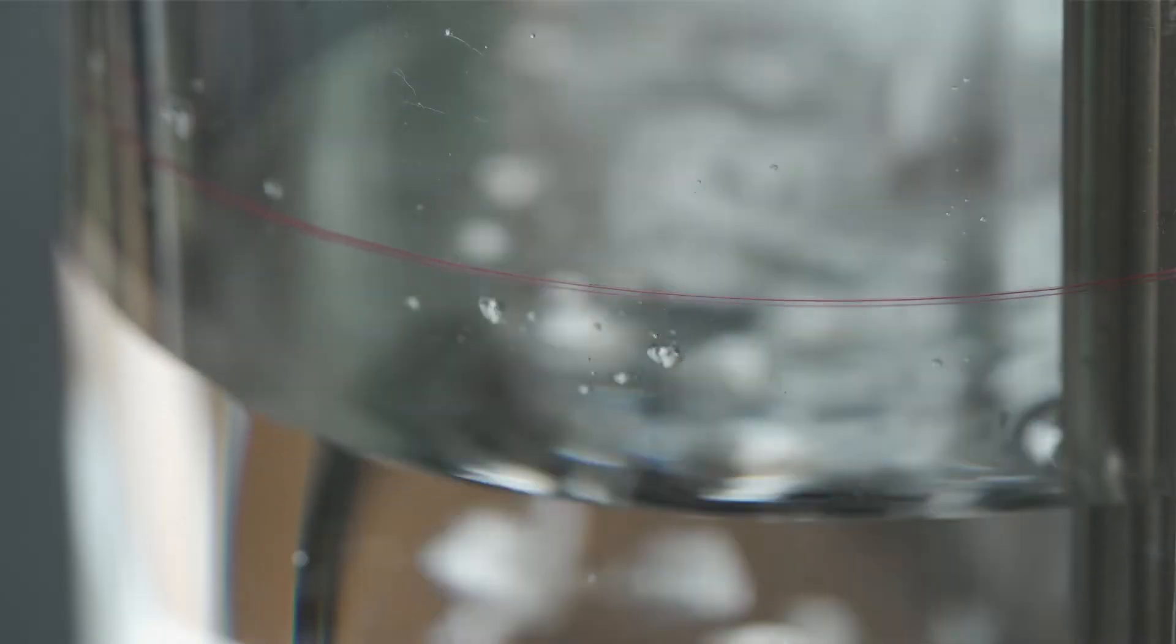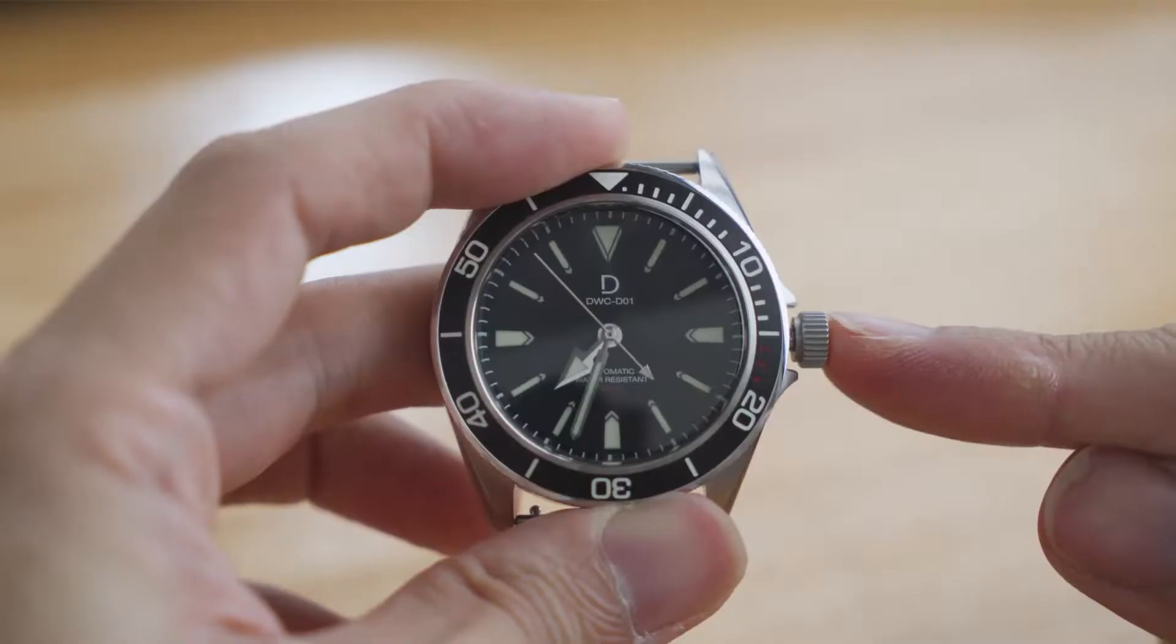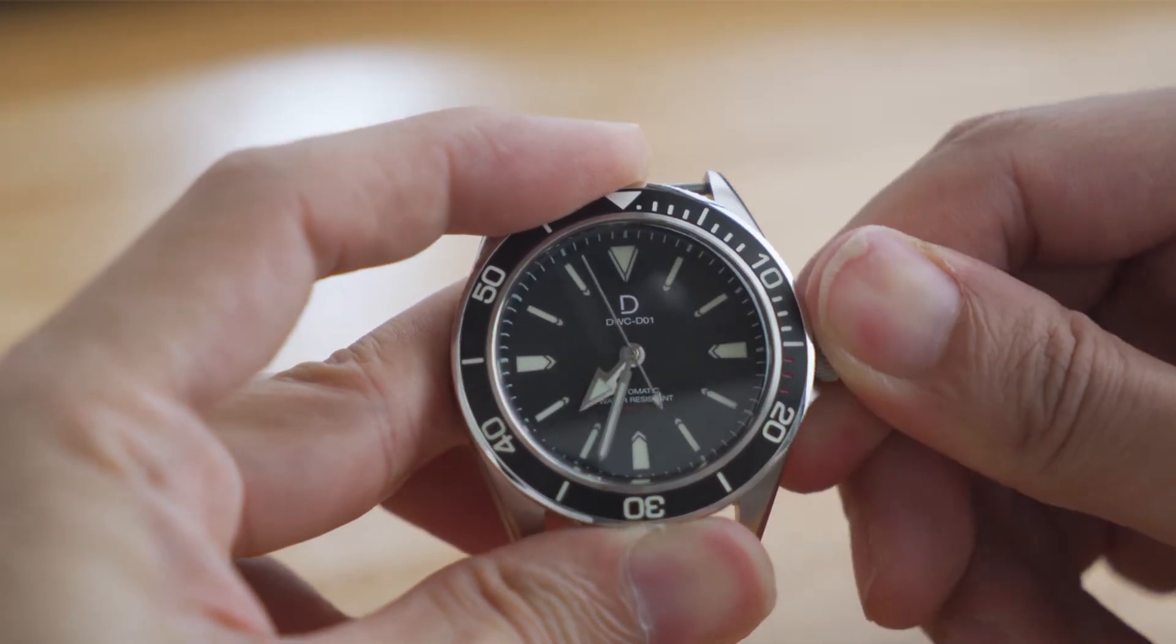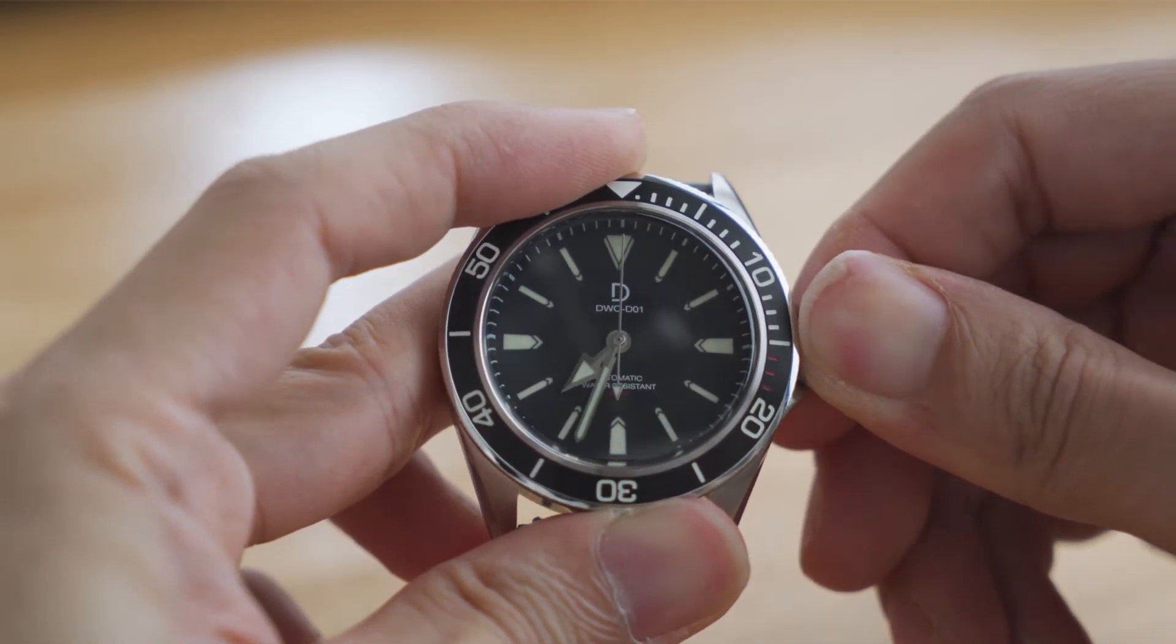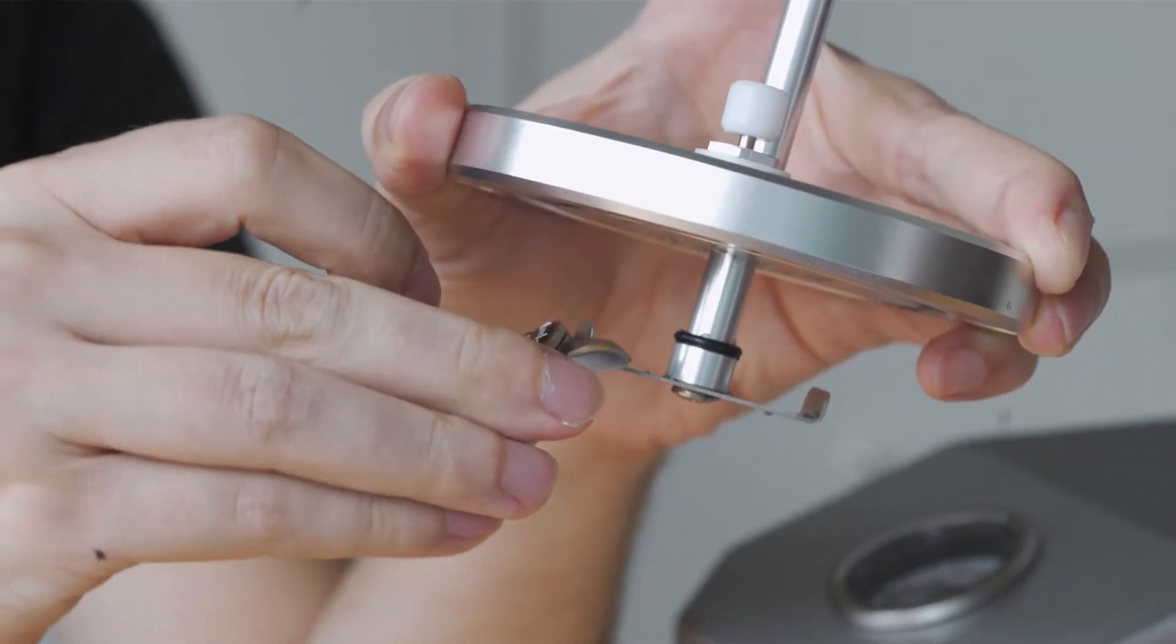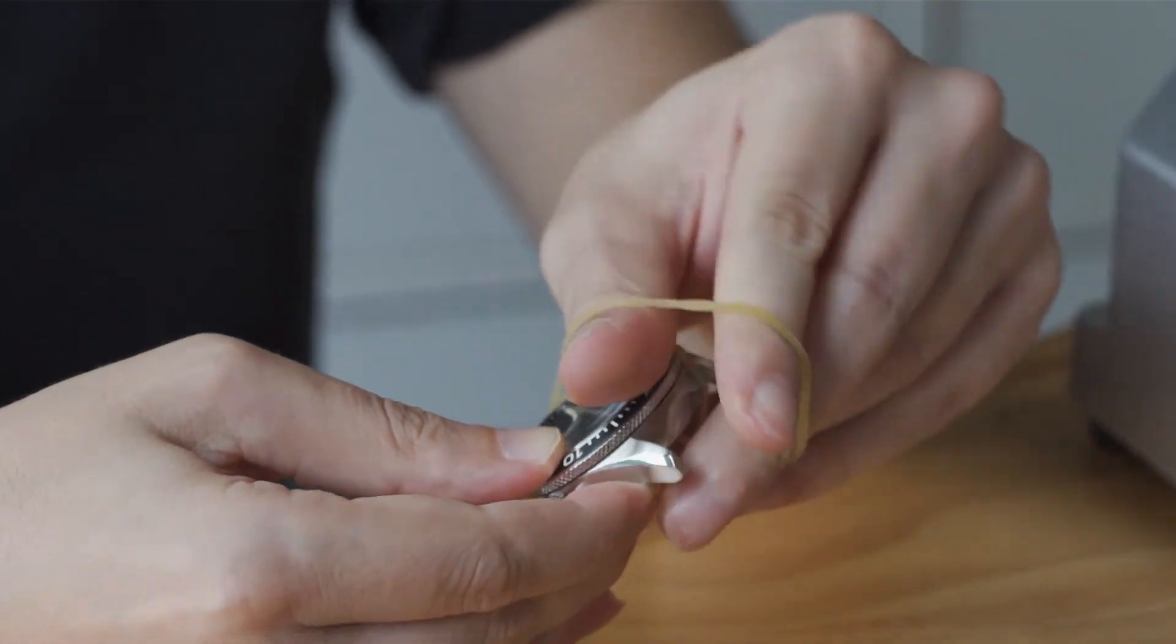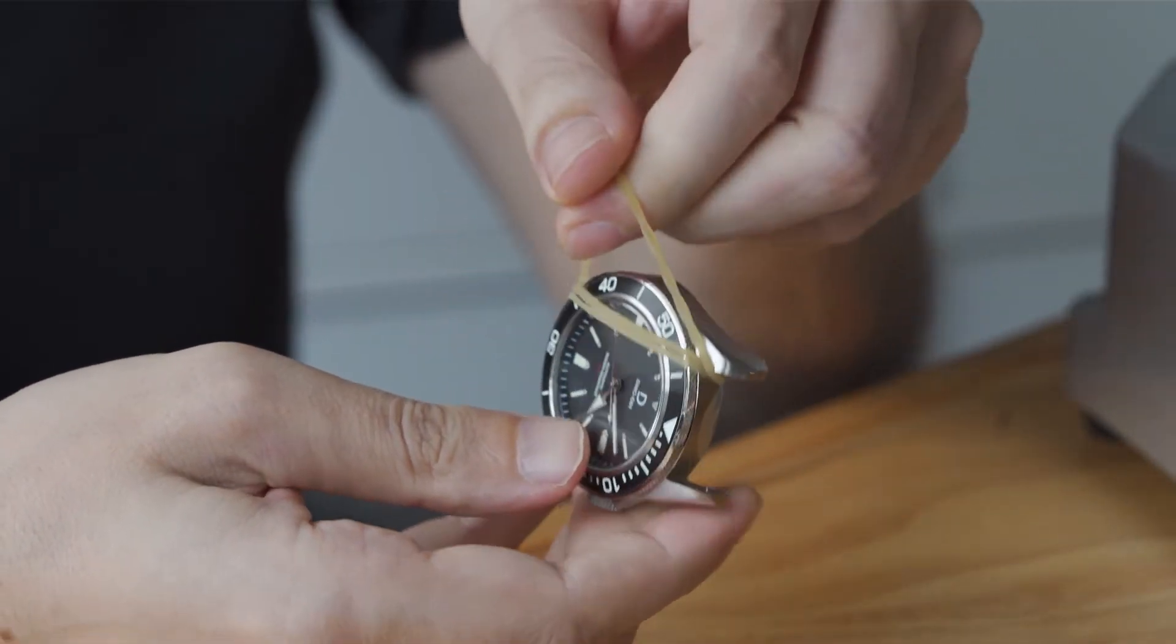Fill the chamber with water up to the red line. Use only distilled water to avoid mineral deposit. Then take the watch and push the crown all the way in. Screw it in as well if it's a screw down crown. Then hang a watch with a spring bar onto the hook at the bottom of the lid. But if you don't have a spring bar on hand, you can loop a rubber band around the case like this to create a secure loop.